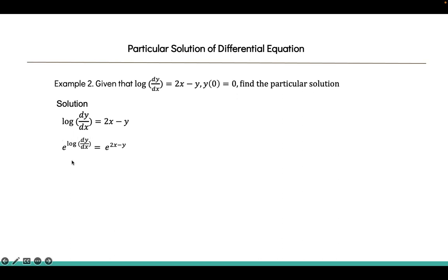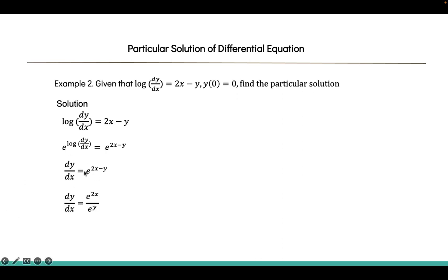Using the logarithm law e^(log x) = x, the left side simplifies to dy/dx. On the right side, using the quotient law e^(m-n) = e^m/e^n, it becomes e^(2x)/e^y. Now separate the variables: take e^y to one side and dx to the other side.